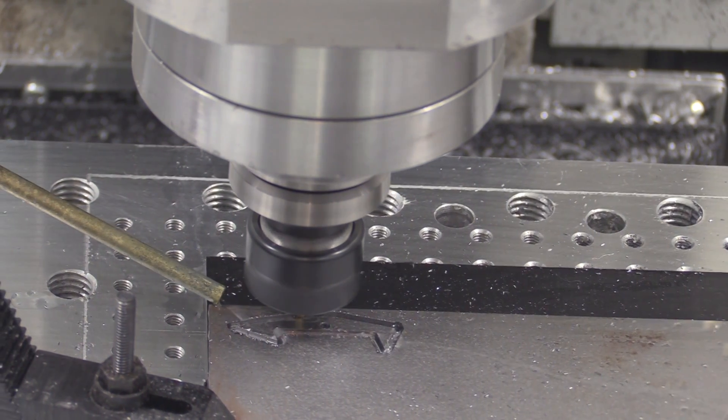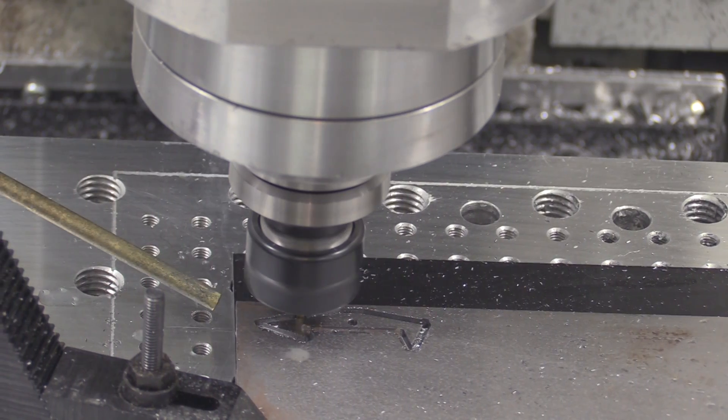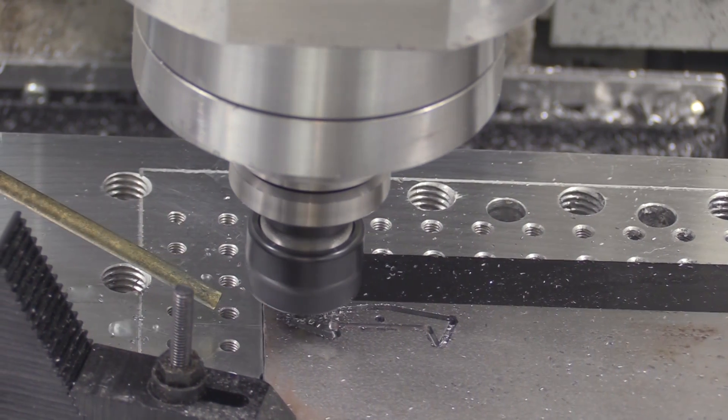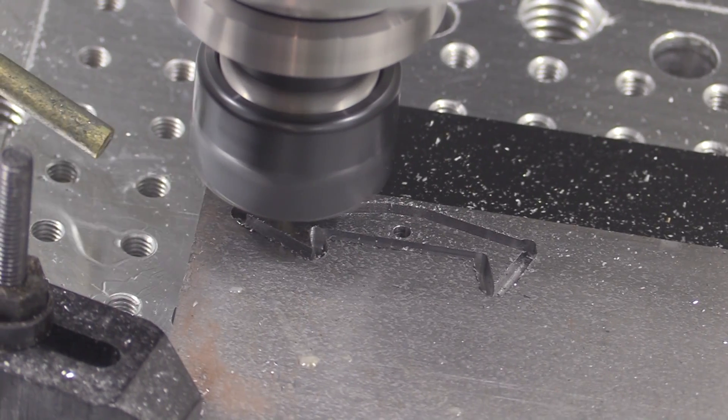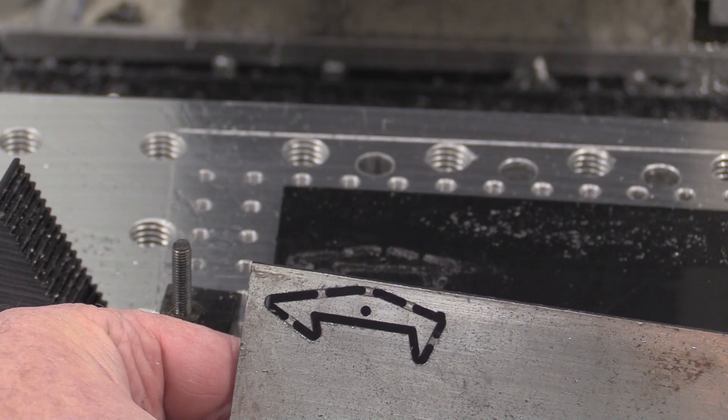I'm making several passes at various depths until I cut all the way through the part. And then at the end here, you can see what the part looks like with the tabs in it.